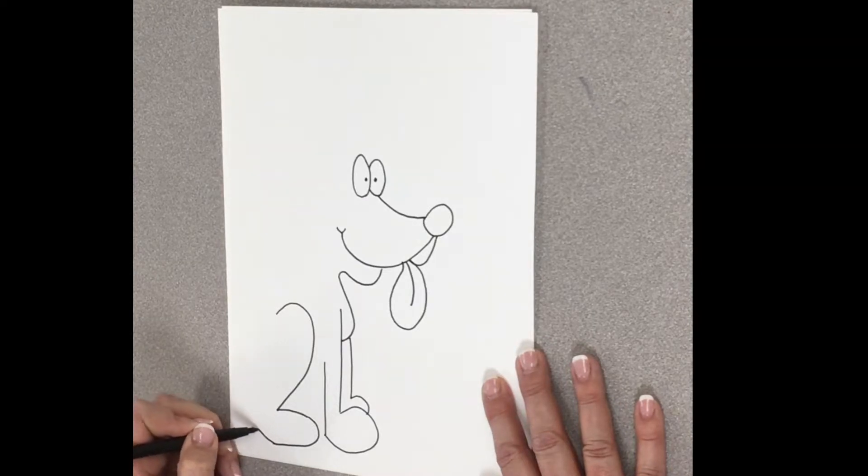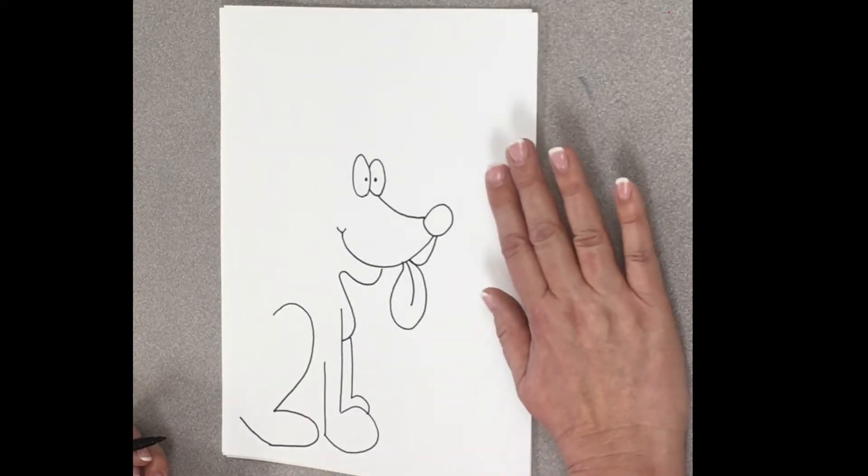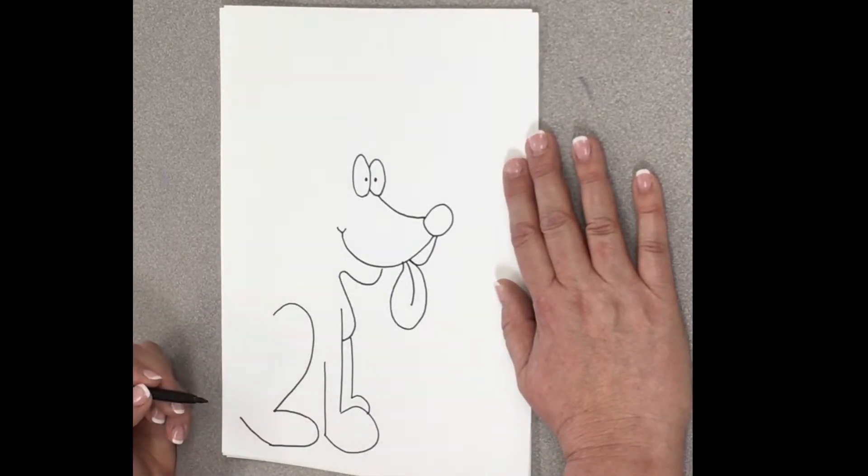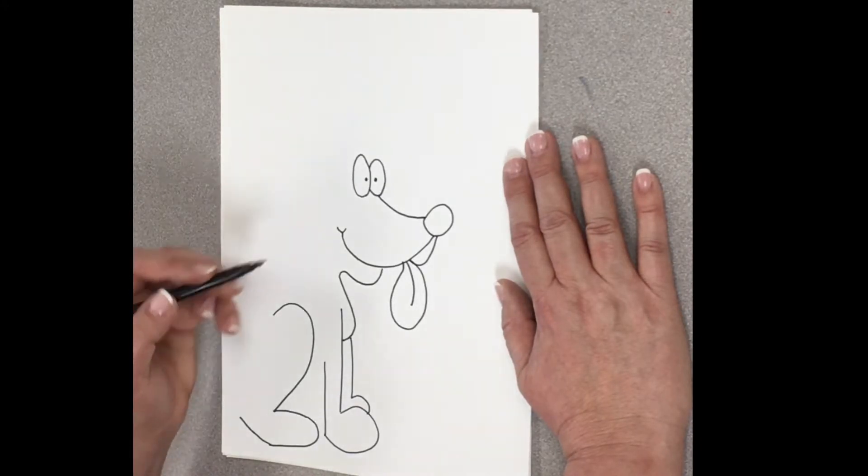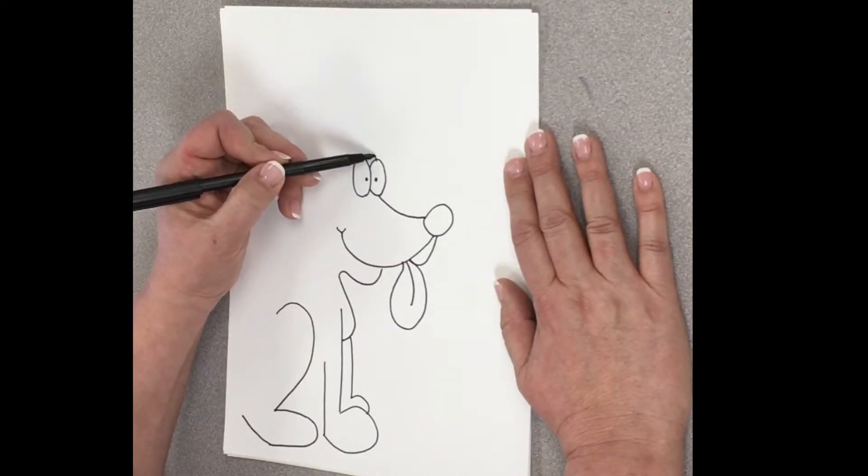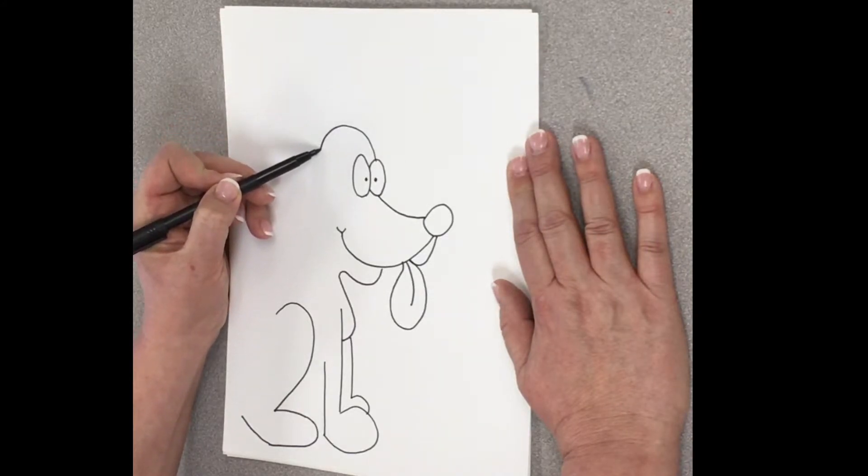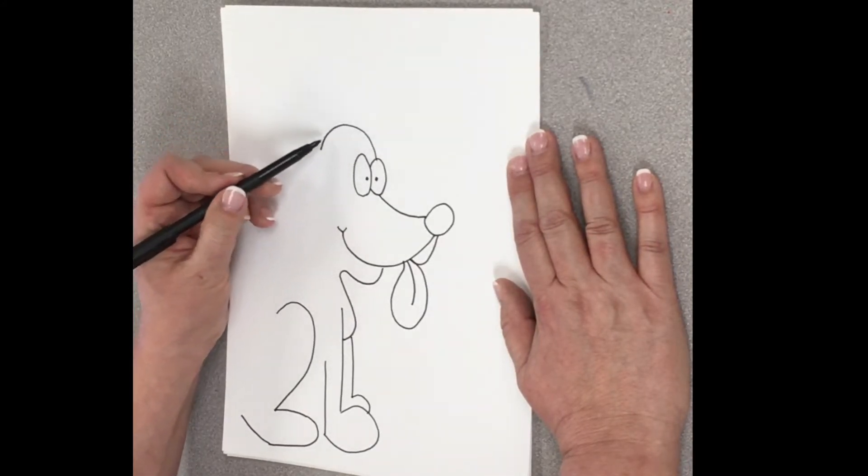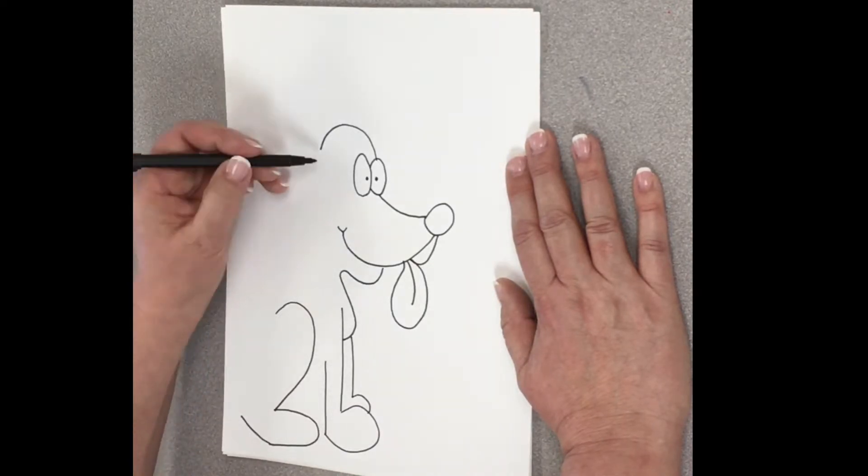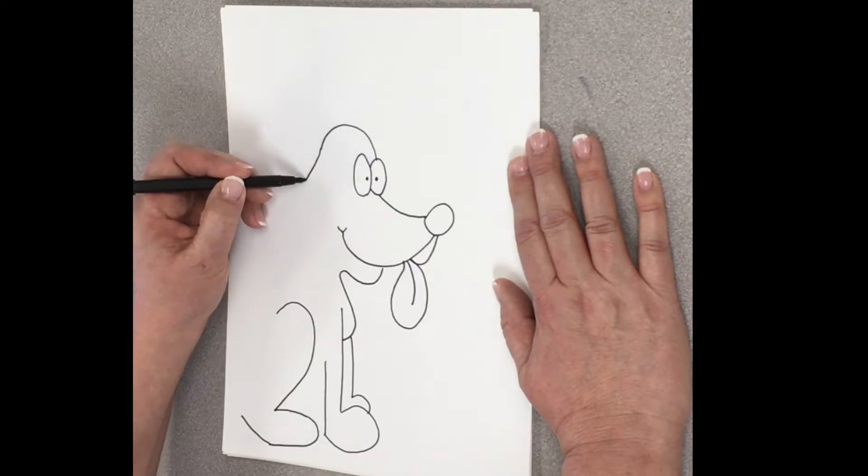And then I'm going to draw a line kind of diagonal. Okay, so I'm going to leave that for just a little bit. And then I'm going to work back up on top. So, up here on his little head, I'm going to draw another kind of letter N. Just kind of a nice half circle.